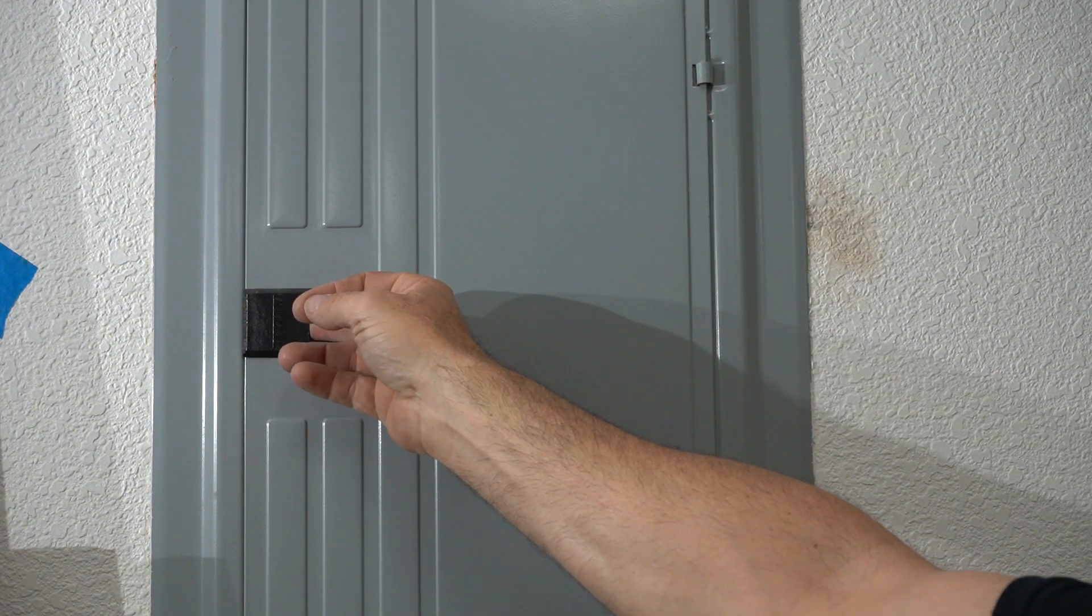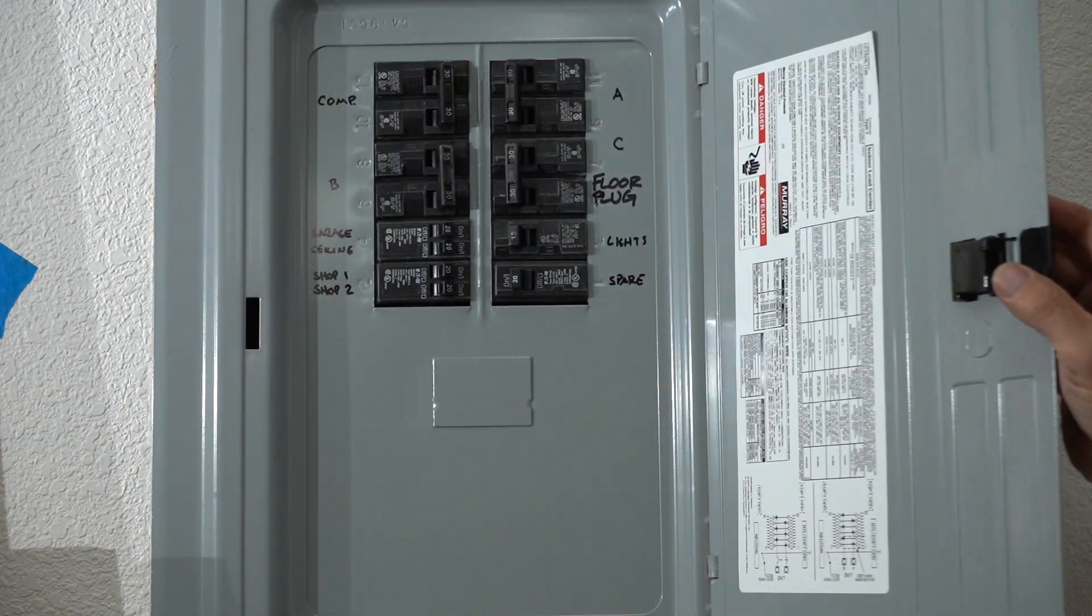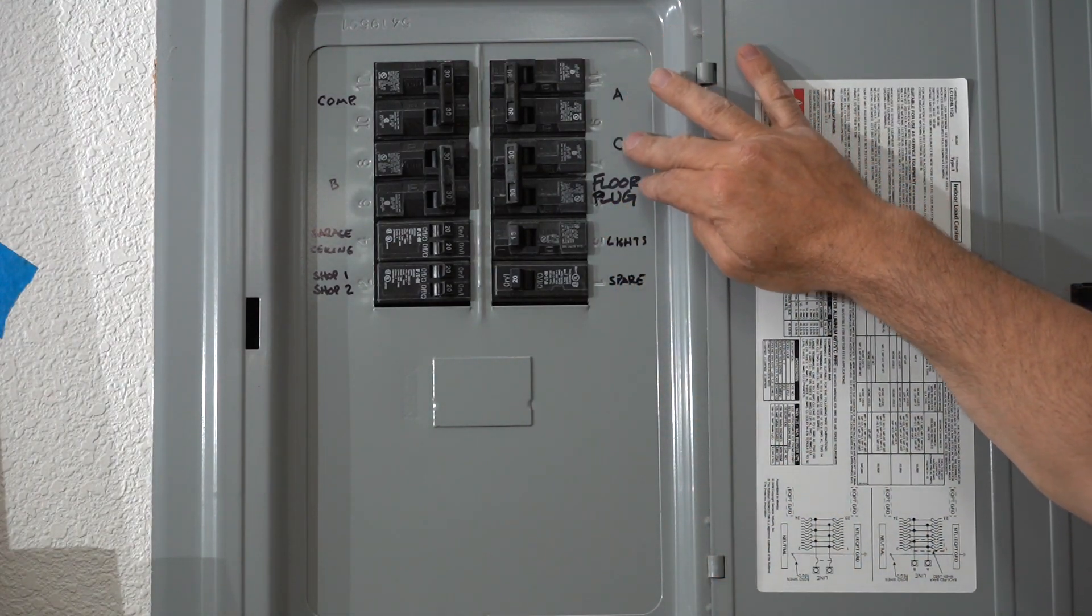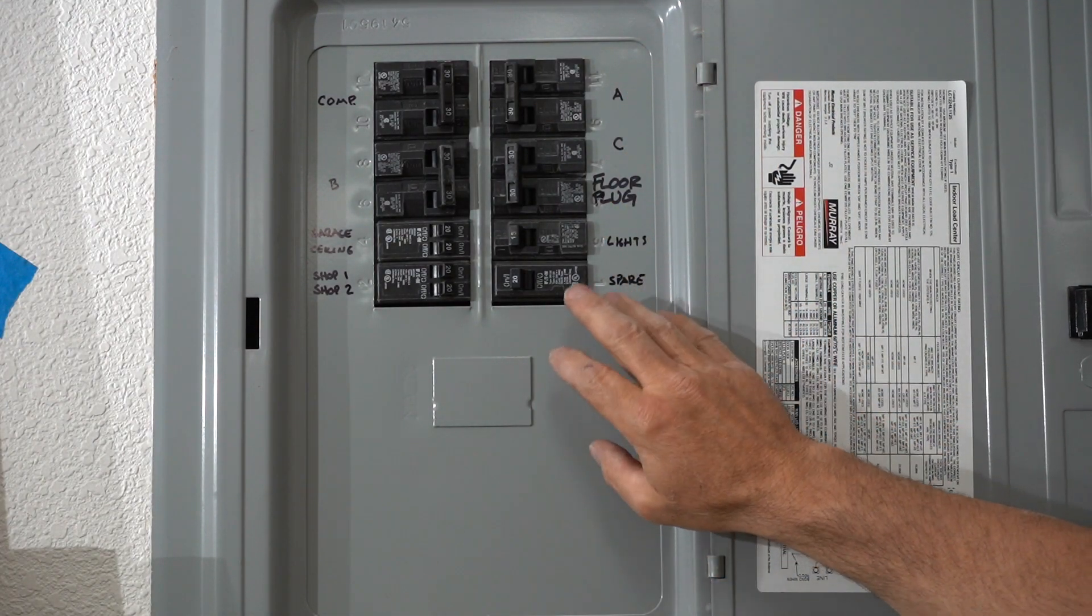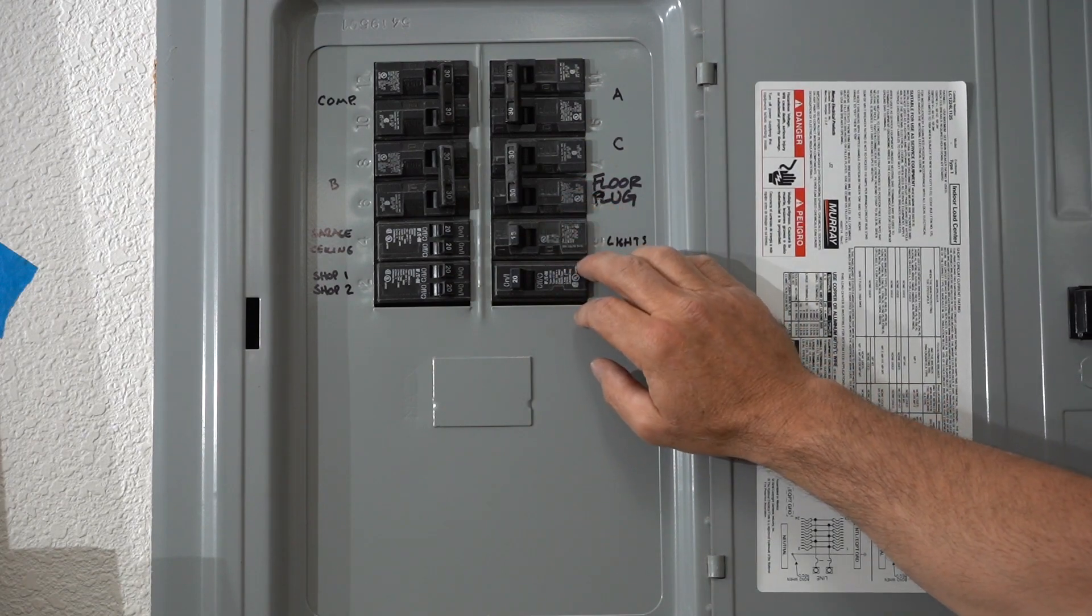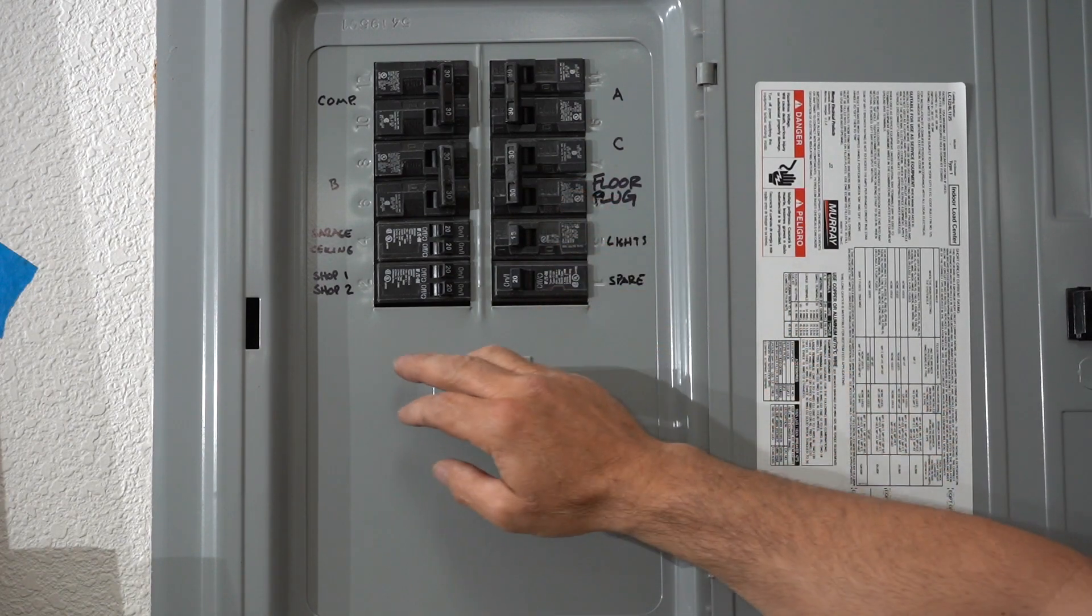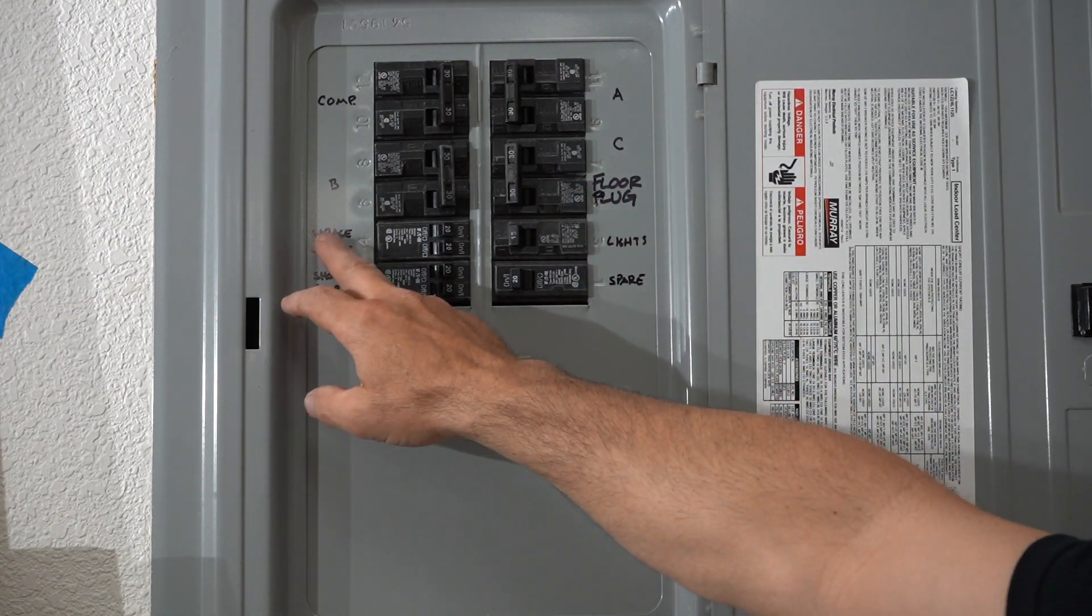Okay, so here's my sub panel inside my shop and you can see I've marked everything. There's spare lights, floor plug for my table saw, shop lights, garage ceiling lights.